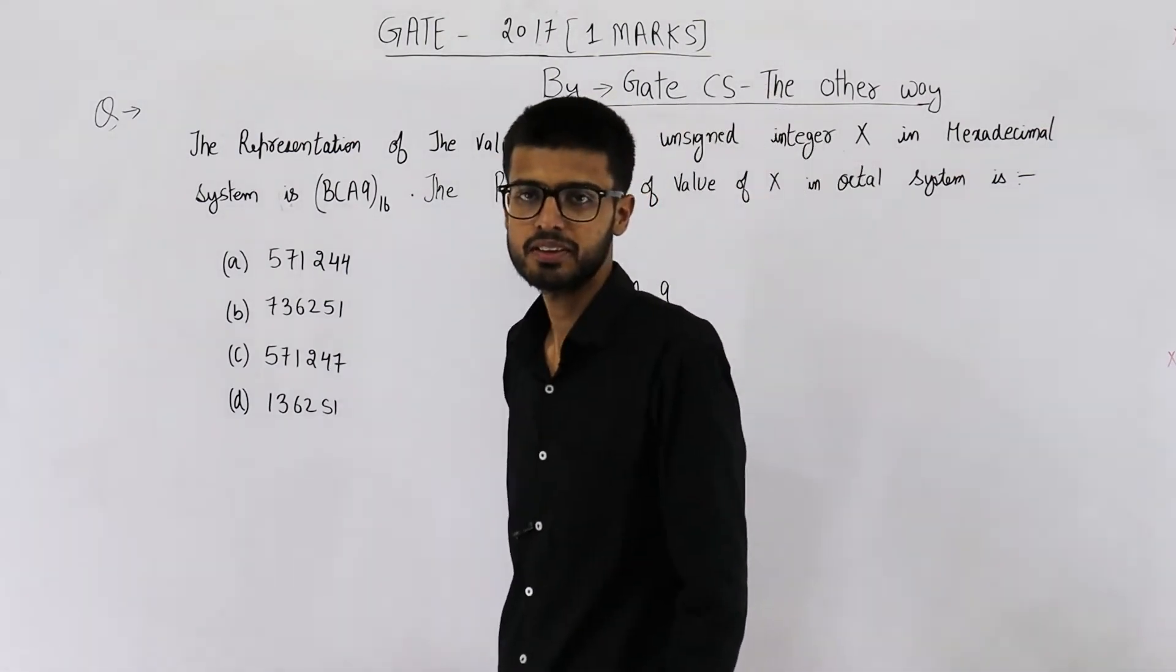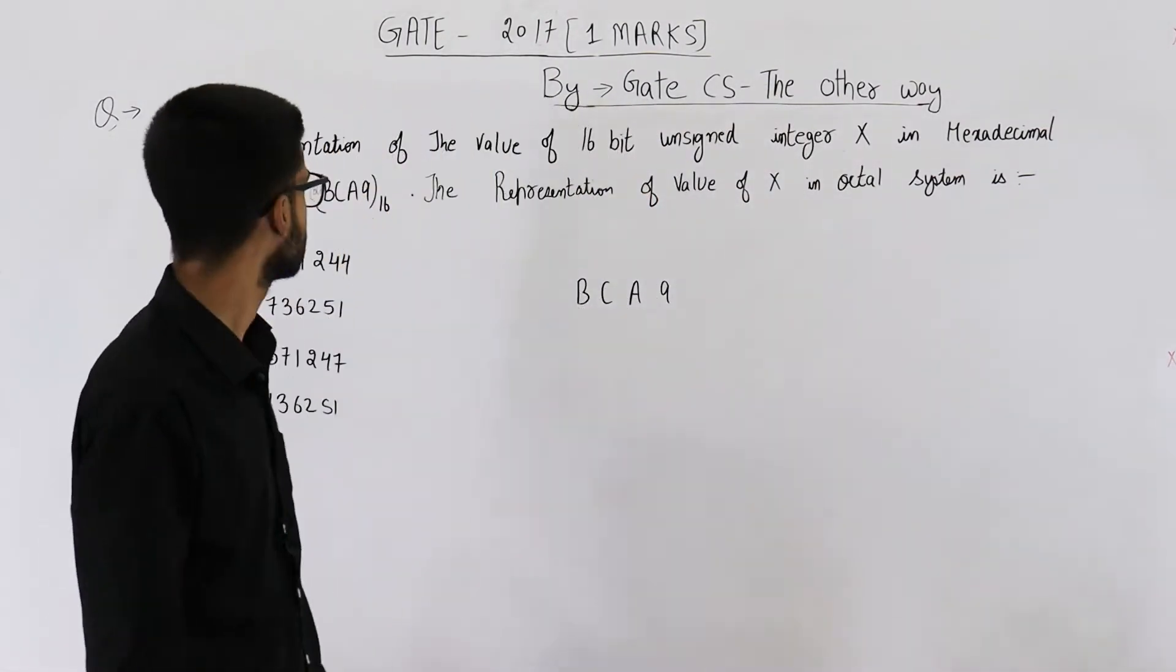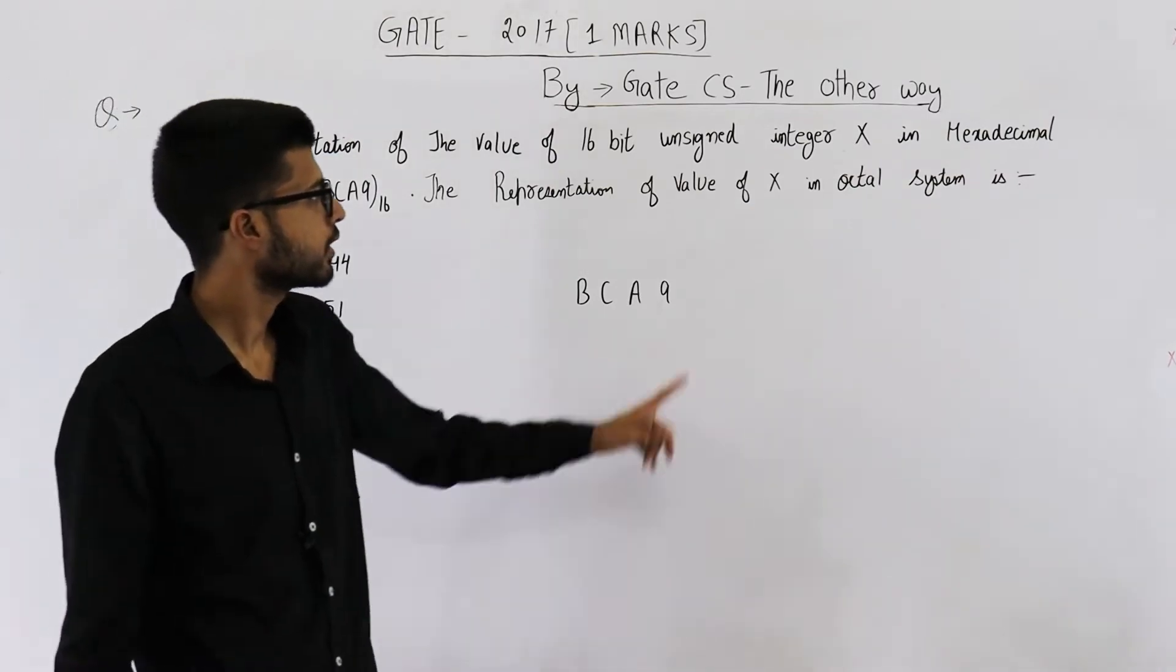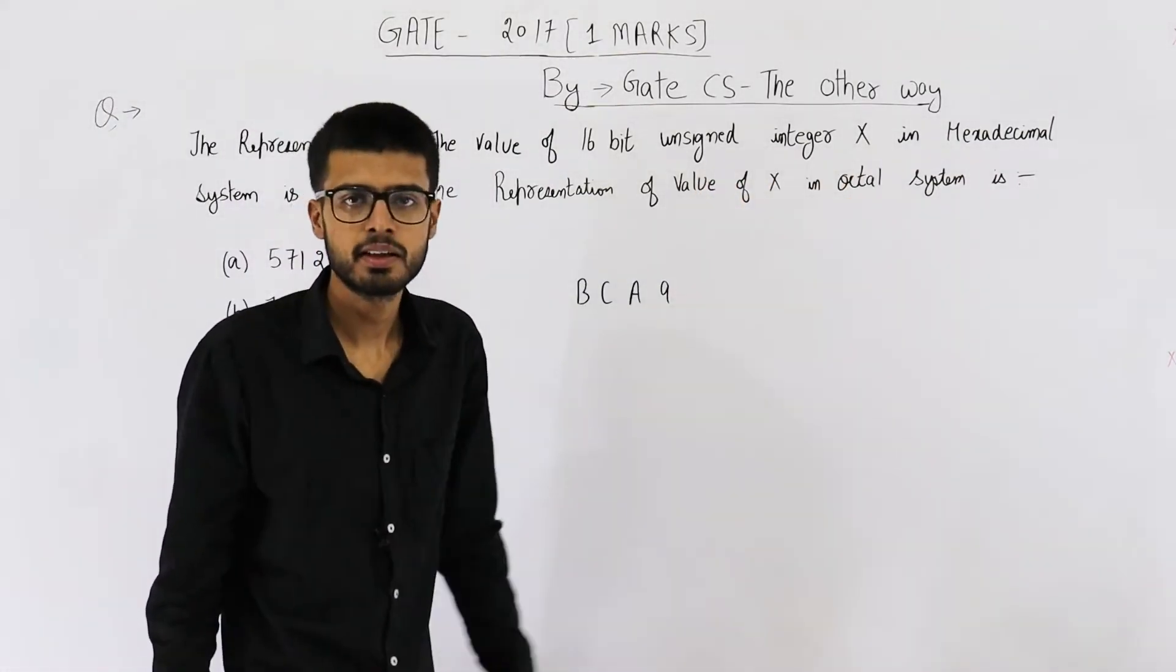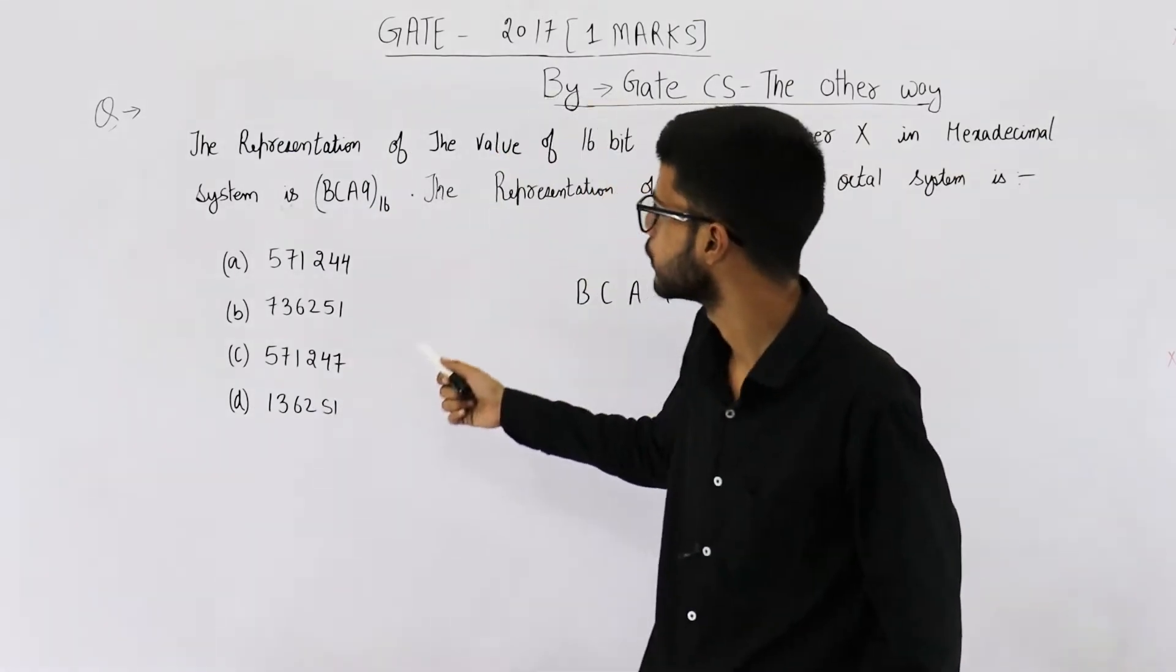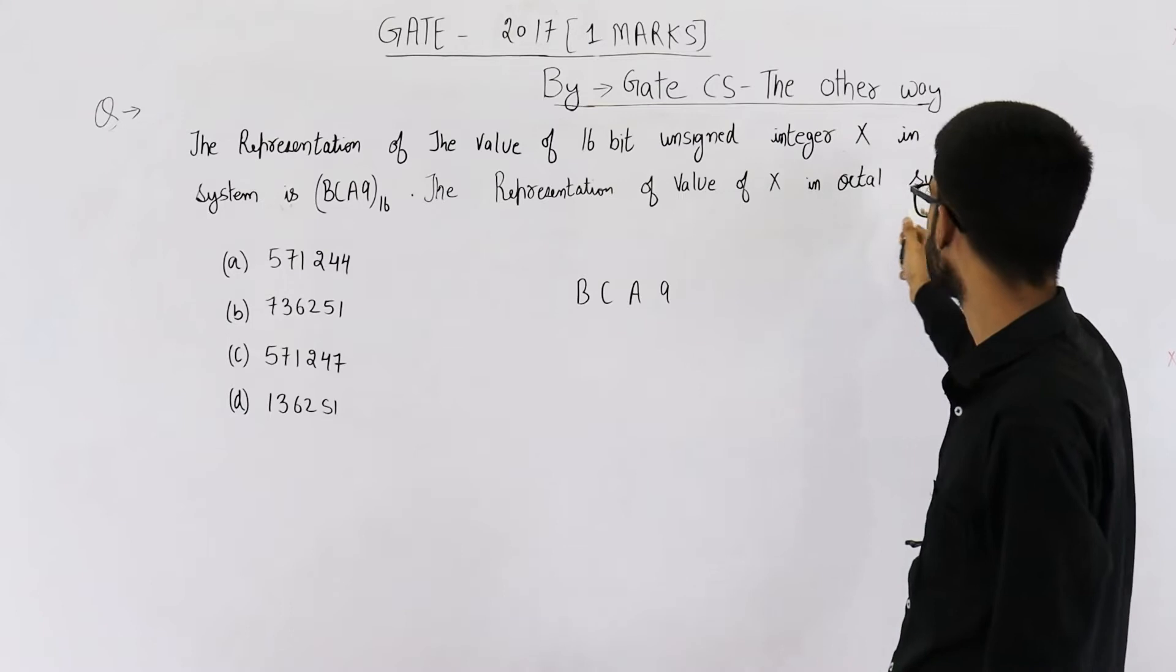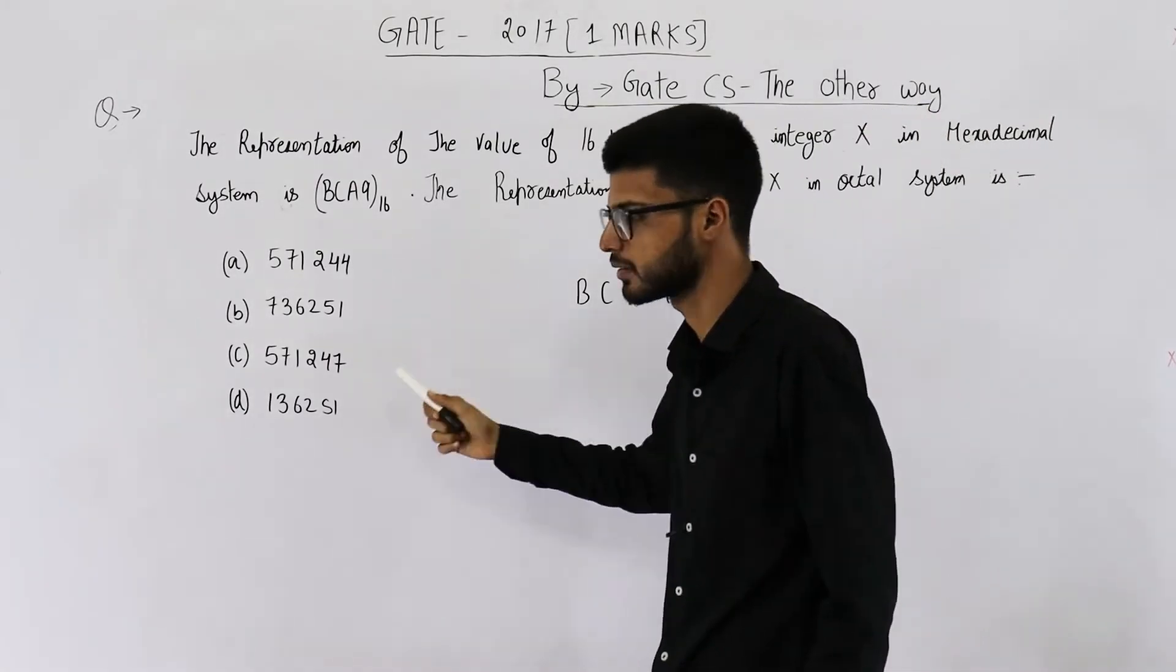Welcome back students. The question is from 2017. The representation of the value of 16 with unsigned integer x in hexadecimal is given. The representation of value of x in octal system is. You have these four options.